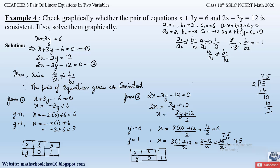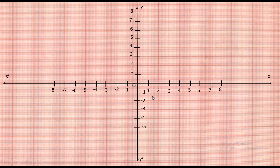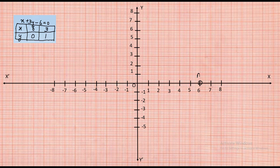Now let us plot the graph on the x-axis and y-axis. From the table for Equation 1: at x = 6, y = 0 we get point A; at x = 3, y = 1 we get point B. Drawing a line through these two points represents the equation x + 3y − 6 = 0.